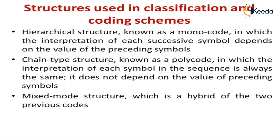The code structure can be a monocode or hierarchical structure, a chain-type polycode structure, or a mixed code structure. In hierarchical coding, each subsequent digit depends on the previous code — there is a dependency between codes. In chain type, every code is independent of the others. A mixed structure combines both approaches.